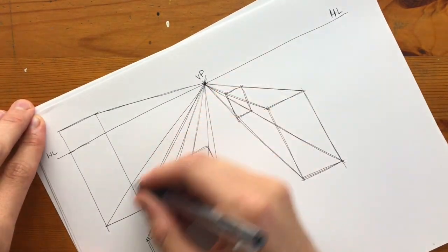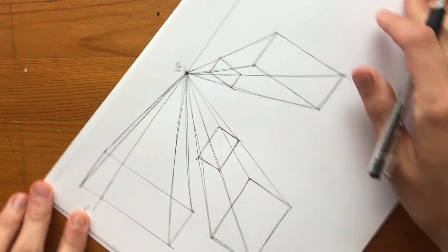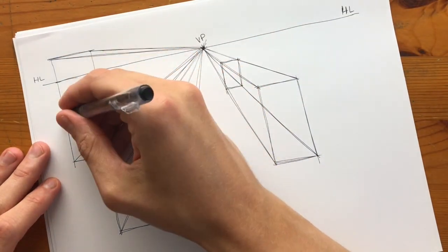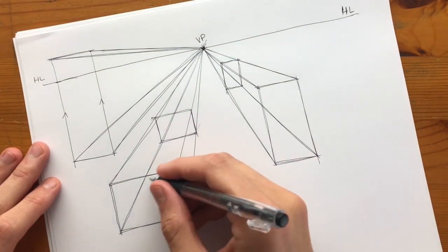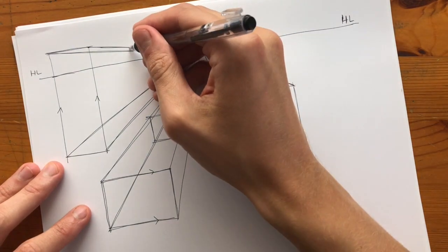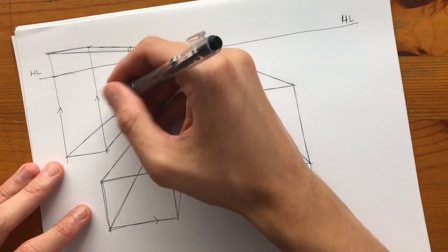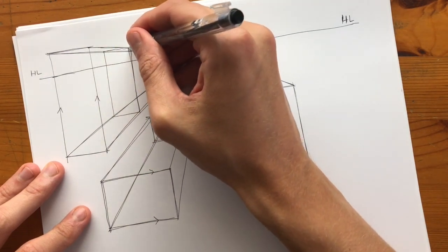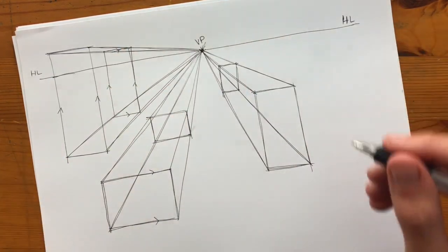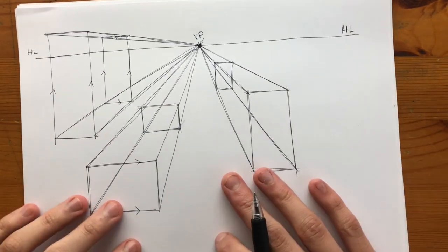What's nice about one-point perspective is that everything that isn't an edge going towards the vanishing point is parallel. So these guys are parallel to each other. You don't have to do any other convergence lines apart from the vanishing point lines. So that's one-point perspective.